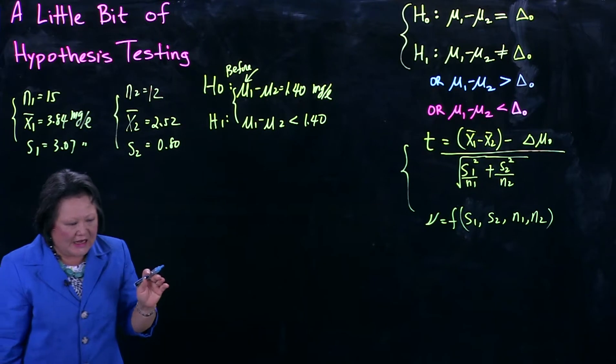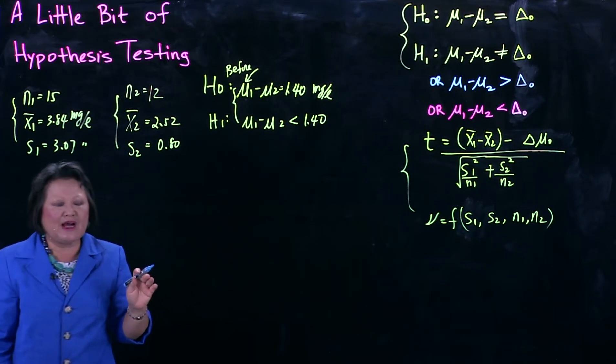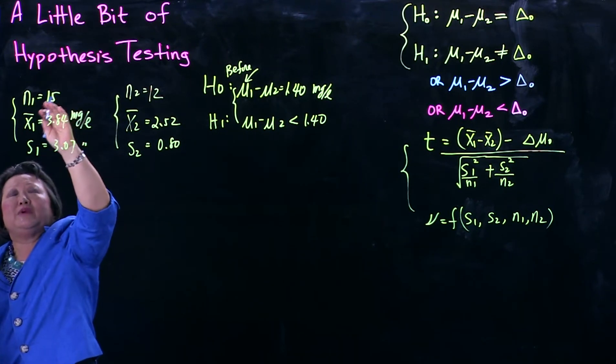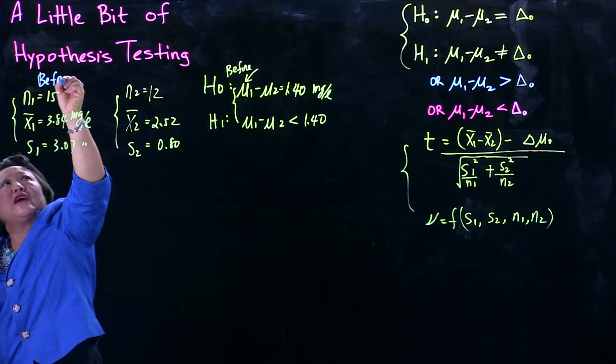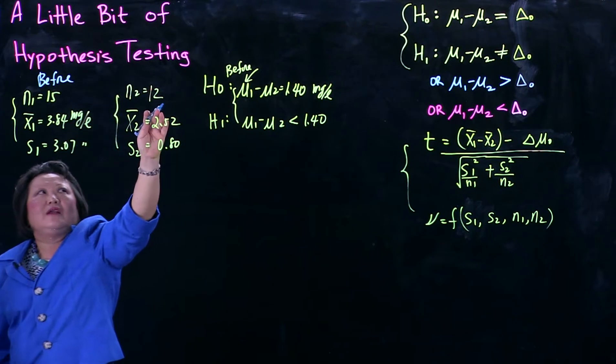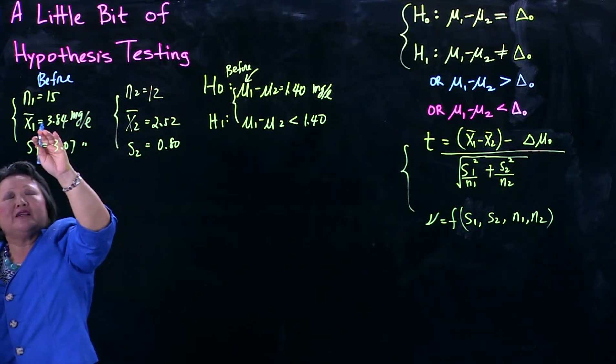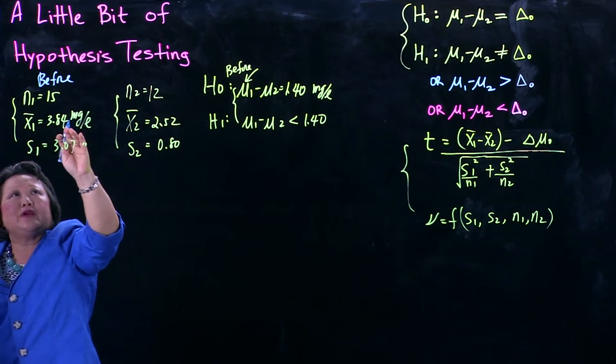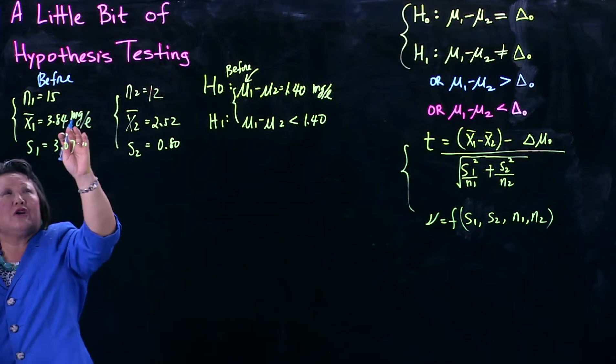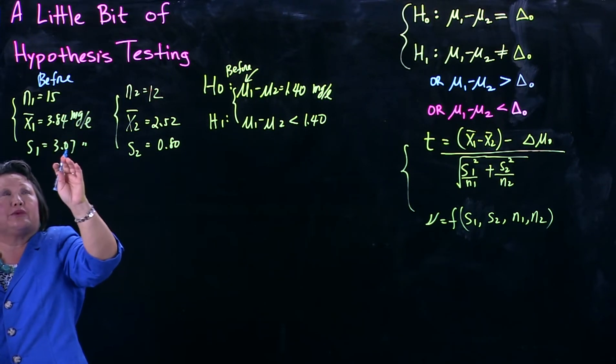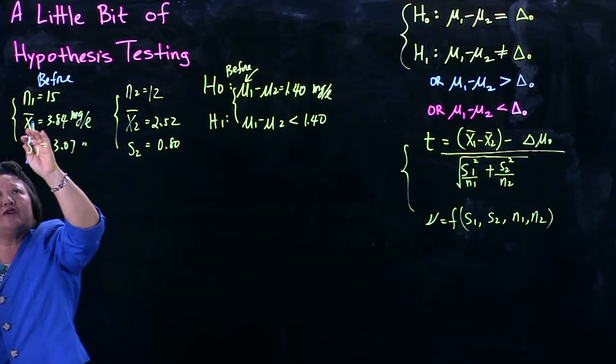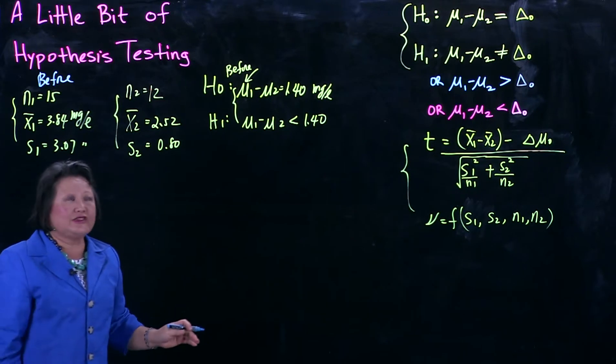Here's my sampling result. For instance, along the lake, before, this is the before, I took before sampling at 15 sites, and then after at 12 sites, and maybe I ran out of money so I only did 12. My sampling level, the pollution level before, X1 bar is 3.84 milligram per liter, with S1 of 3.07. Notice this is rather large. This is 3.8, this is 3. So plus or minus, this will be 6-point-something, this will be 1-point-something. So there's a large variation between sites, between the 15 sites.